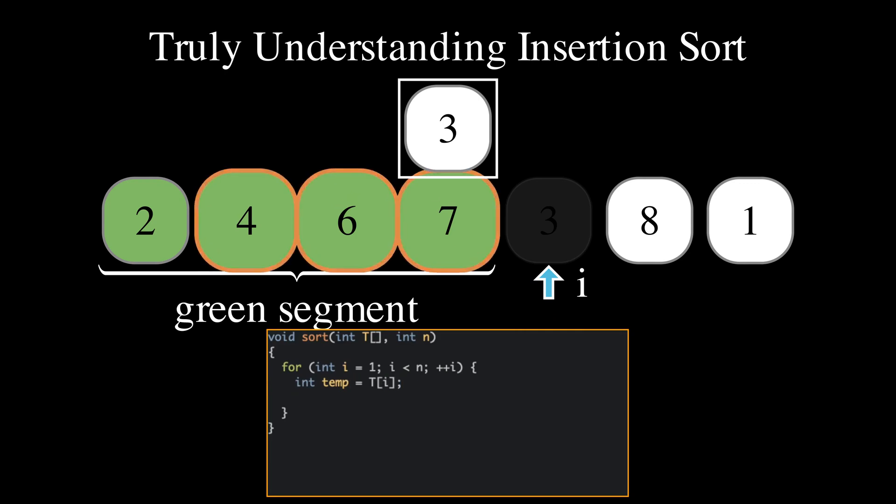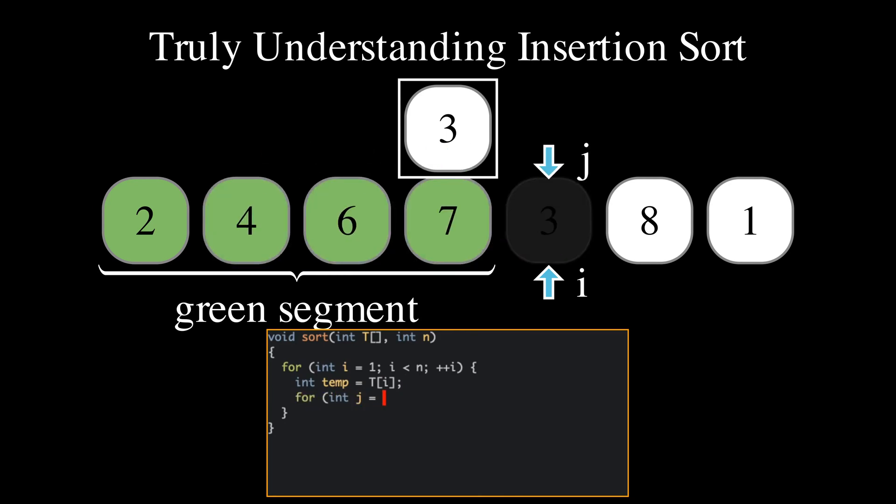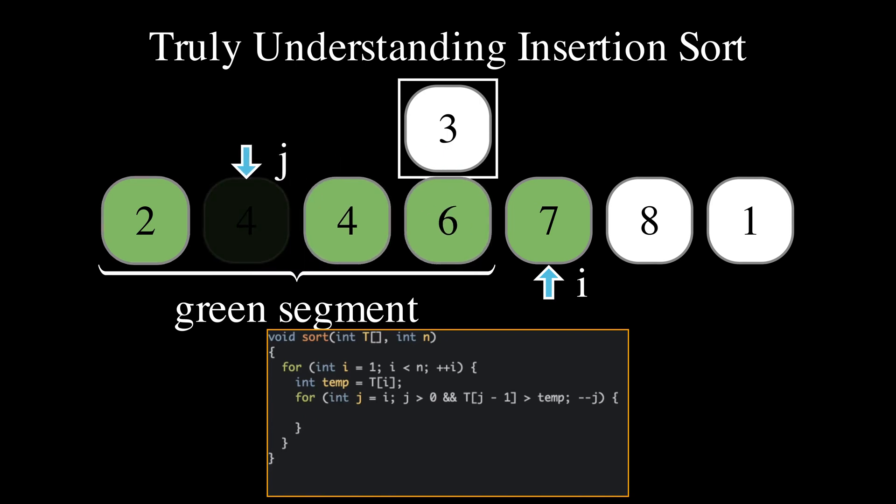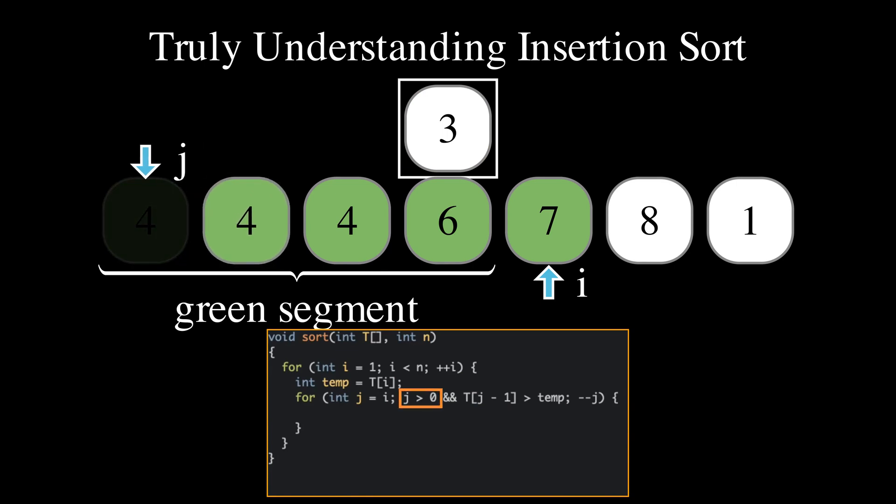We loop over all elements larger than the current element, with the index j storing the position into which to shift them. The loop stops when the element just before j is smaller or equal to the current element, or when we have finished shifting all elements in the array and j therefore hits zero.